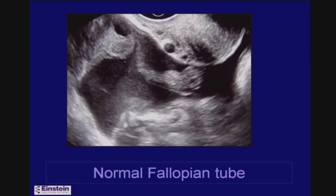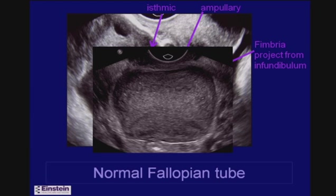One can visualize normal fallopian tubes with ultrasound. It often helps to have a small amount of fluid — in this case there was a moderate amount from rupture of a cyst — to outline the fallopian tube. Here you can see the interstitial portion, the thinner isthmic portion, the ampullary, and the fimbriated end.